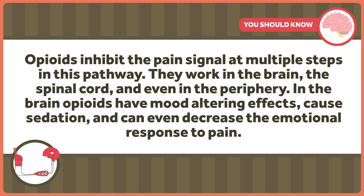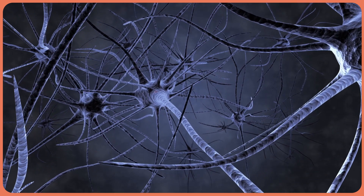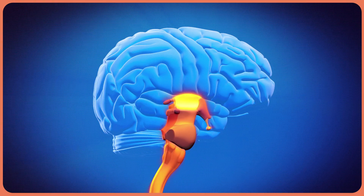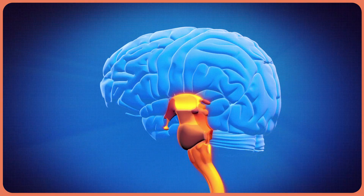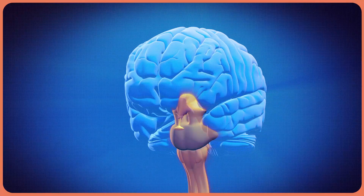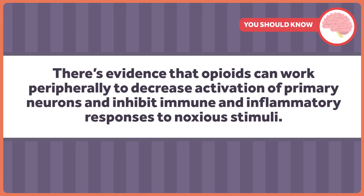Opioids inhibit the pain signal at multiple steps in the pathway. They work in the brain, the spinal cord, and even in the periphery. In the brain, opioids have mood-altering effects, cause sedation, and can even decrease the emotional response to pain. Opioids block the signaling from the primary nociceptors to the secondary neurons. They also work on neurons that descend from the brain stem to the spinal cord to modulate pain signals — suppressing fibers that amplify the signal and enhancing fibers that inhibit it. There's even evidence that opioids can work peripherally to decrease activation of primary neurons and inhibit immune and inflammatory responses to noxious stimuli.